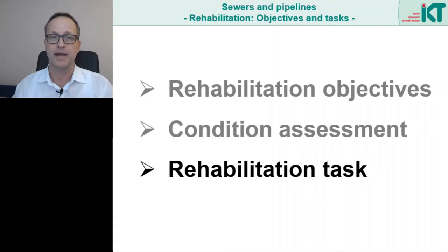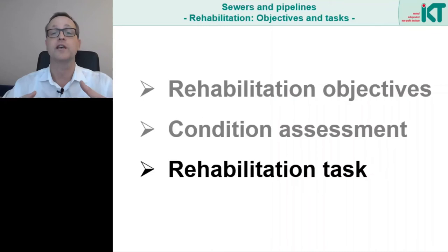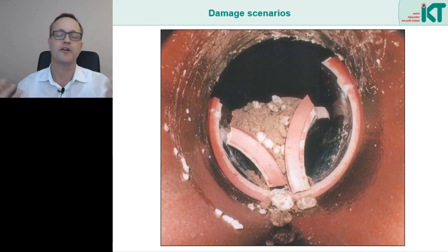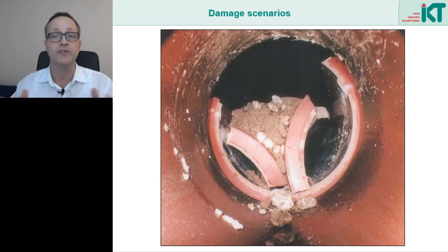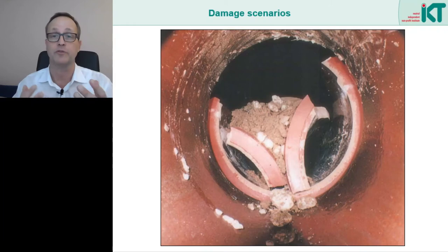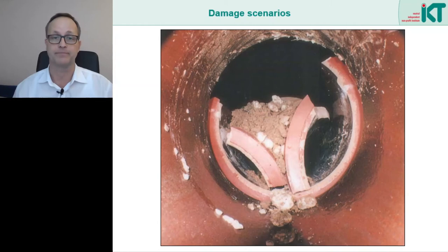Let us take a detailed look at our damage examples, asking what each scenario means for operational safety, stability and tightness — not only for the present time but over the entire service life. In this picture the sewer has clearly collapsed, so the assessment is obvious: nothing works here anymore. The sewer is not operationally safe because this is essentially a blockage. It is obviously not stable, and it is also leaking to a great extent — the ground is even collapsing. A rehabilitation method would have to restore stability, tightness and operational safety. The entire pipe-soil system must be restored, meaning the only option is to dig up the pipe and lay it again.